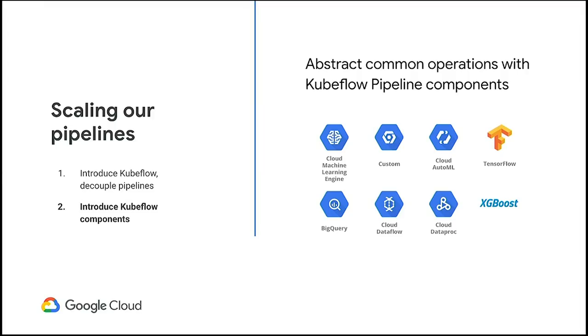To reduce the amount of boilerplate code, we introduced Kubeflow components to our data scientists. These components are pre-built by Google — you can use APIs, Dataproc, or other systems for common operations in your Kubeflow pipelines. You can also offer your own custom components, which allows us as an engineering team to abstract users away from common operations like retrieving data from feature stores or publishing to custom in-house deployment environments.